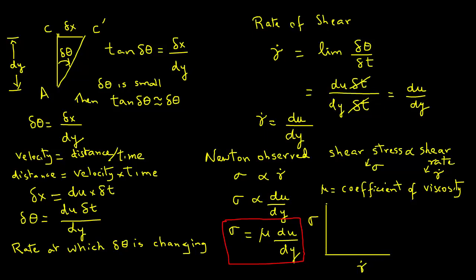Newton is the one who first observed this direct proportionality. So for all types of fluids that have this direct proportionality between shear rate and shear stress are called Newtonian liquids. Water is a Newtonian liquid, milk is a Newtonian liquid, juices are Newtonian liquids, and so on.